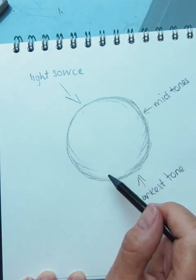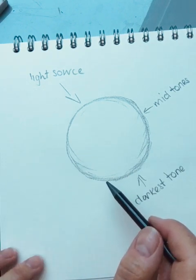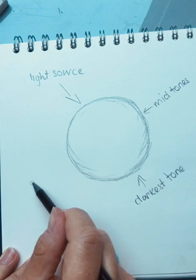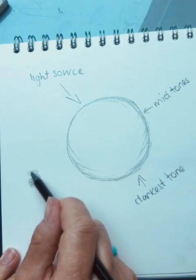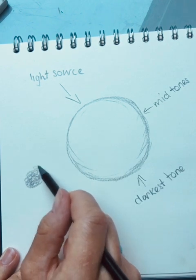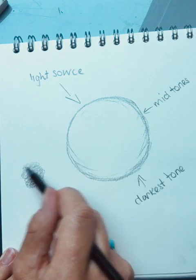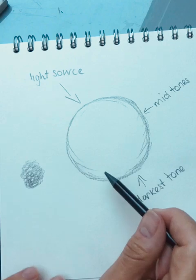I'm going to use a technique that actually I like to call scribbling. So it's basically you're just going round and round in circles. Again, this is quite a dark pencil. This is a 6B, just to show you that you can see this on the screen.